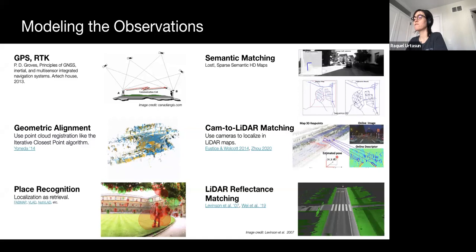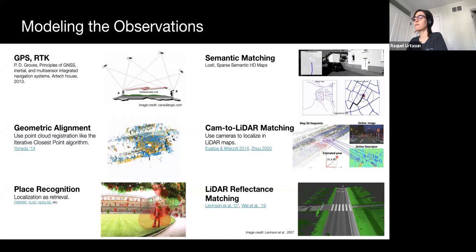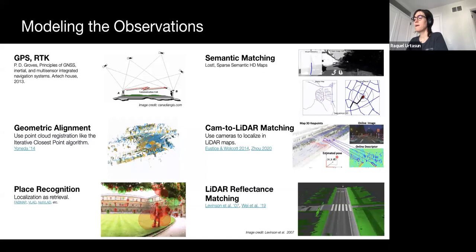In principle, any of these approaches can work with any of the previously discussed frameworks. You can use semantic matching via a Kalman filter, a particle filter, or a histogram filter. You can filter GPS using particle filters, etc.